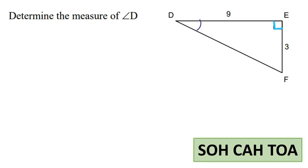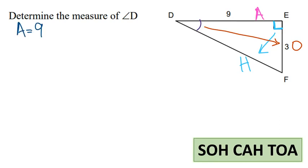The first thing we will do is label our triangle. The side that is opposite to the right angle is called the hypotenuse. The side that is opposite to the angle that we need to find is called the opposite side. And the remaining side is called adjacent. We know adjacent is 9, and we know opposite is 3. We need to find angle d. Now we need to pick the ratio that has both adjacent and opposite, and that would be tan.